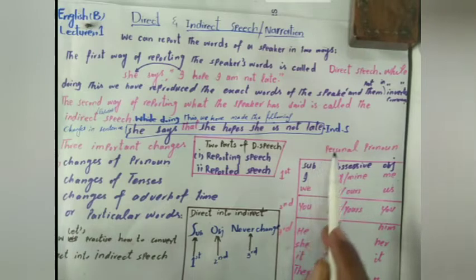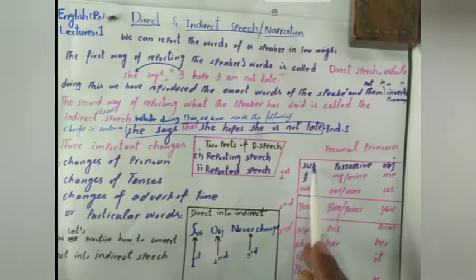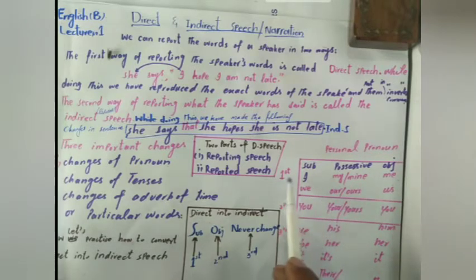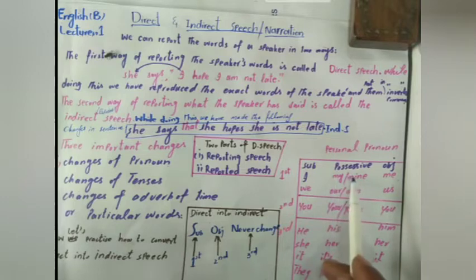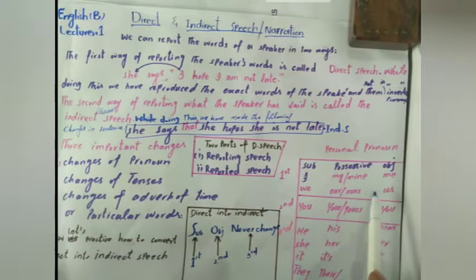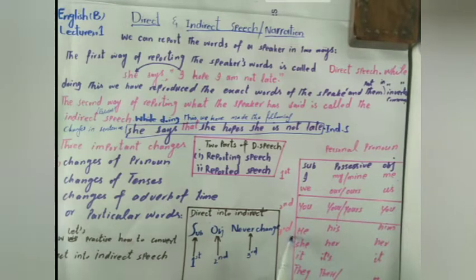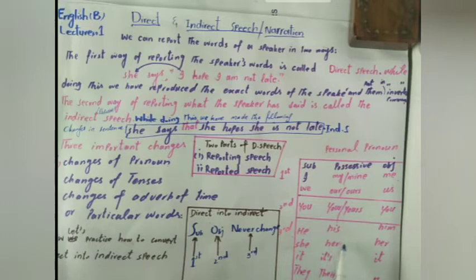Personal pronouns can be first person, second person, or third person. First person subjective is 'I' and 'we'; possessive is 'our' and 'ours'; objective is 'us'. Second person subjective is 'you'; possessive is 'yours'; objective is 'you'. Third person is 'he', 'she', 'it', or 'they'; possessive is 'his', 'her', 'hers', 'its', 'their'; objective is 'him', 'her', 'it', 'them'.